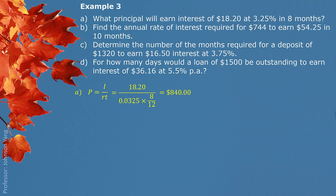Part B: find the annual rate of interest required for $744 to earn $54.25 in 10 months. We are looking for annual rate r, so we use the alternative formula r equals I divided by PT. We put the information in: $744 as principal, $54.25 as interest, 10 months switched to years by dividing by 12. The answer is 8.75% as the annual interest rate.